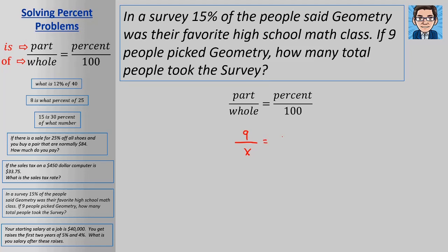And we know that that 9 represents 15% of the people that took it. So again, cross multiply, 15x equals 9 times 100 or 900. We divide both sides by 15. 900 divided by 15 gets us 60. So 60 total people took this survey.